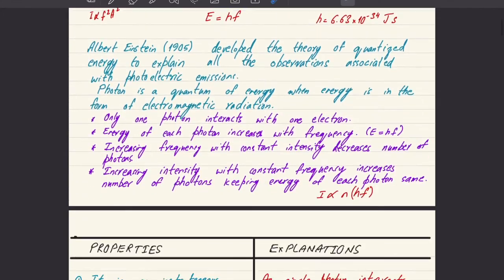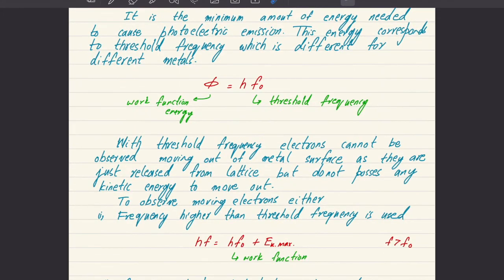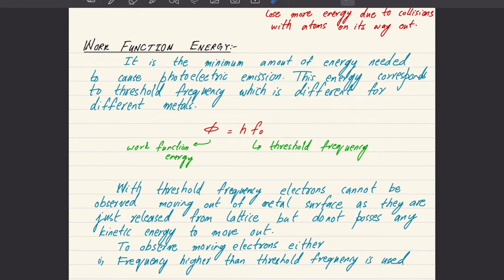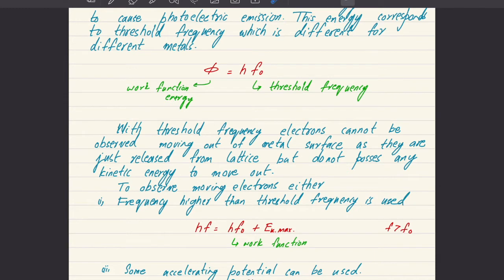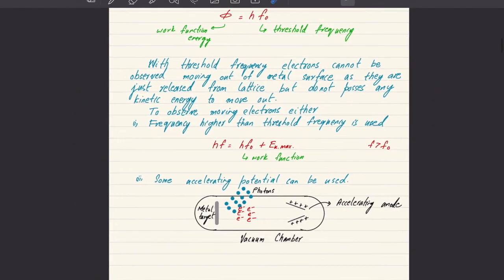The work function energy is the energy associated with the threshold frequency. If we represent work function energy by φ, then the amount of energy is equal to hf₀, where f₀ is the threshold frequency. So when you calculate the amount of energy associated with the minimum frequency, that amount of energy is called the work function energy.